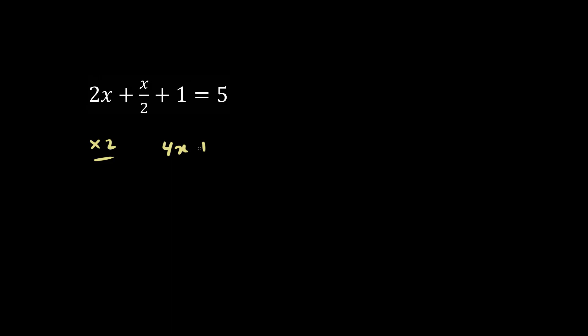2x becomes 4x, and the second term becomes just x, because when we multiply by 2, the 2s cancel. The positive 1 becomes 2, and the 5 becomes a 10. Now this equation is a lot easier to work with.